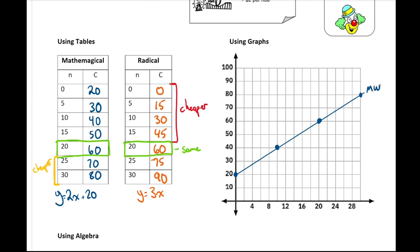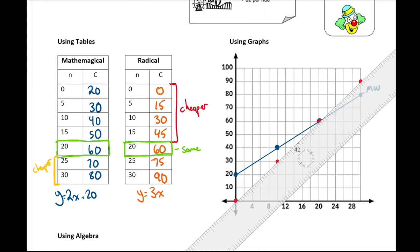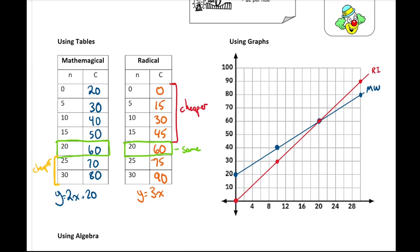Now let's graph Radical Island. We know the constant is zero, so at zero rides it costs zero dollars — that's our starting point. We can use our table points: at 10 rides it's $30, at 20 rides it's $60, and at 30 rides it's $90. Taking those points from our table and graphing them — that's our Radical Island line.